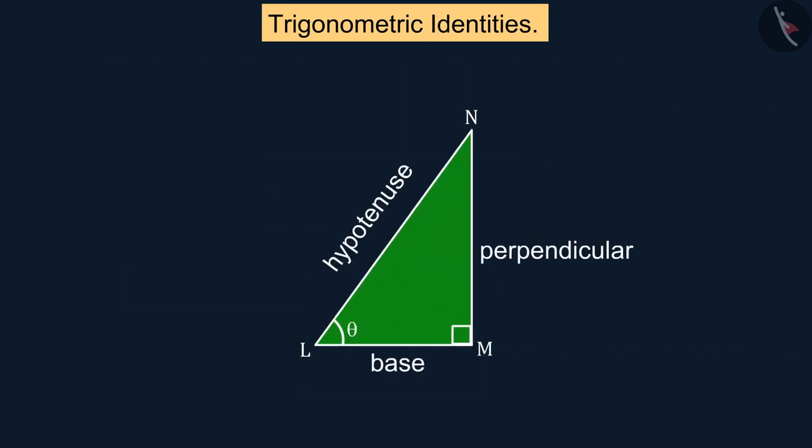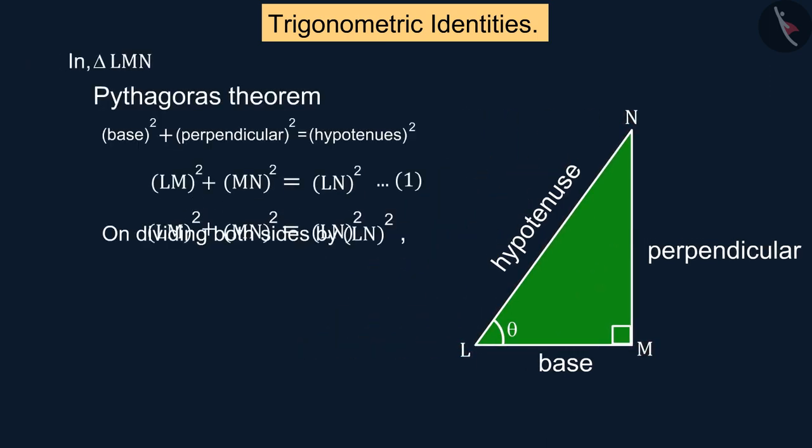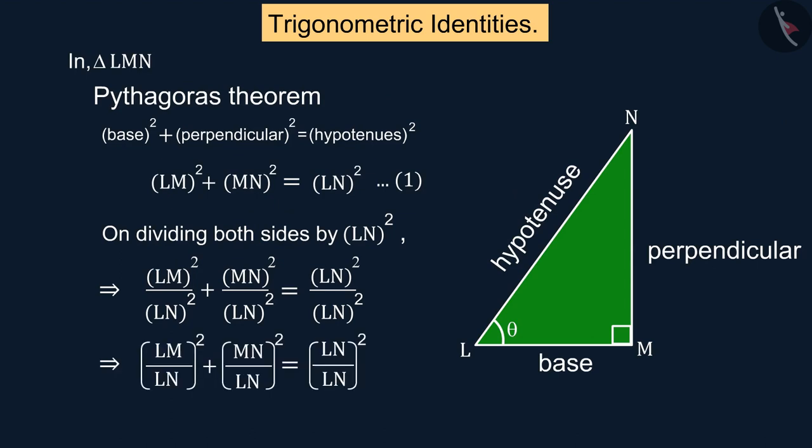In the previous video, we divided the square of LN into each term of equation 1 in the right-angle triangle LMN with the help of the Pythagoras theorem, giving us a trigonometric identity.